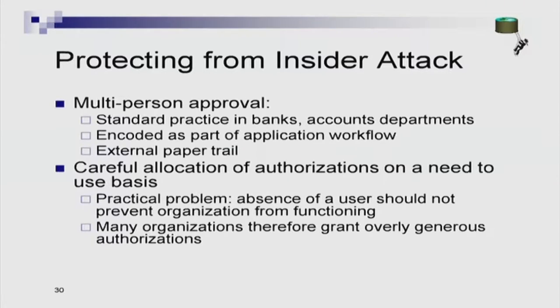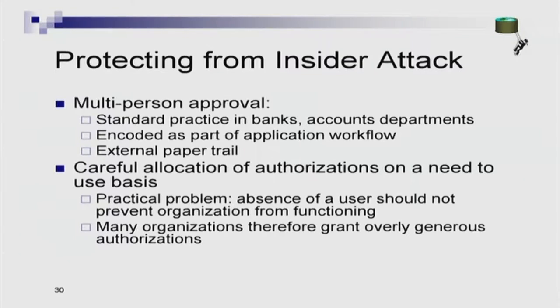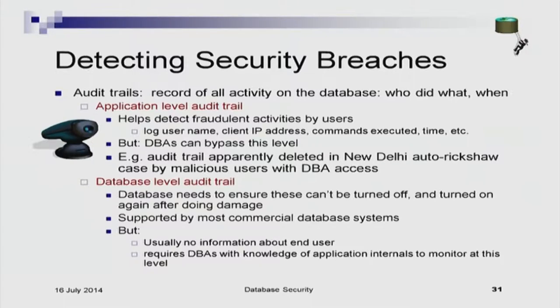There are many more application-level protections against insider attacks. For example, multi-person approval is standard practice in banks and accounts — one person creates it, another person approves it. If one person's user ID is compromised, you can still guard against it. If one person is corrupt, you can still guard against illegal states unless the second person also becomes corrupt. There is also a trade-off in who gets authorization: being very careful restricts authorization to a few, but in practice people go on leave and others cannot do work needed for the organization to function. In practice, authorizations are often granted too loosely.